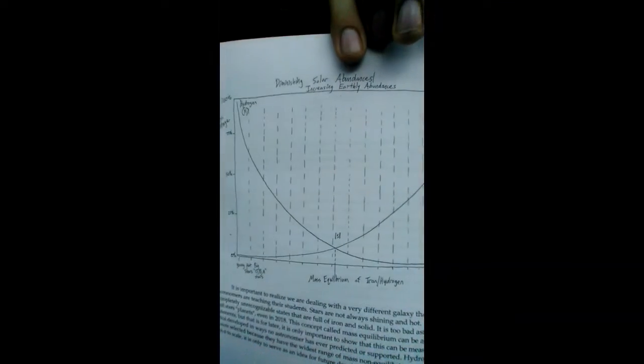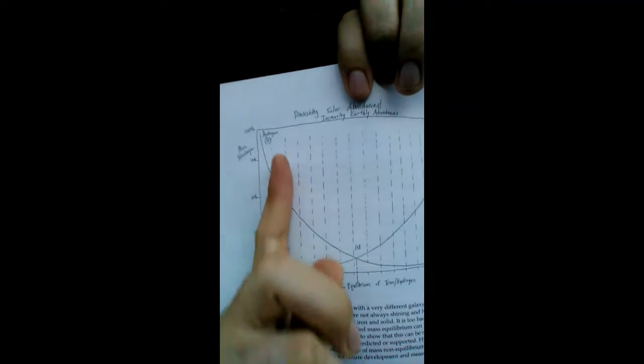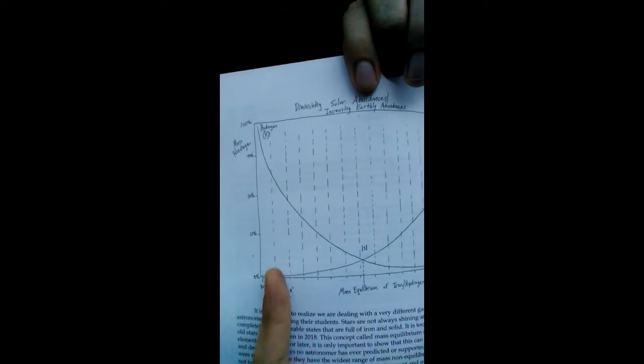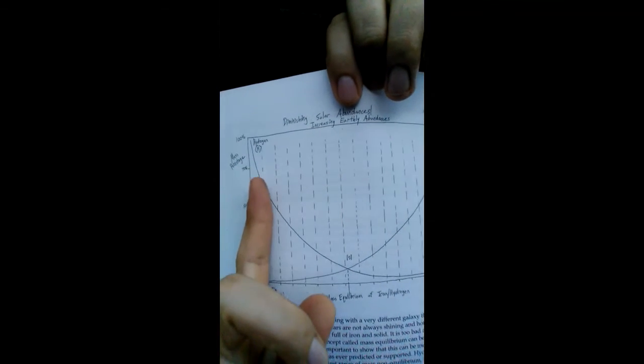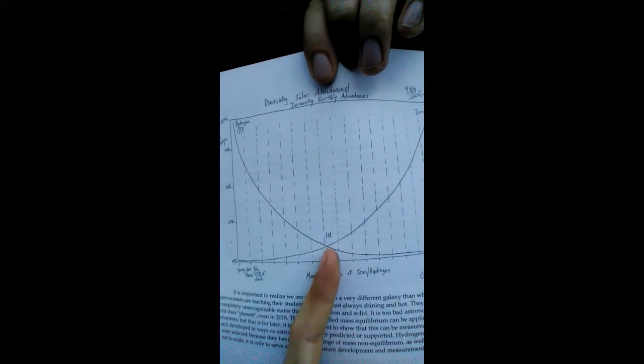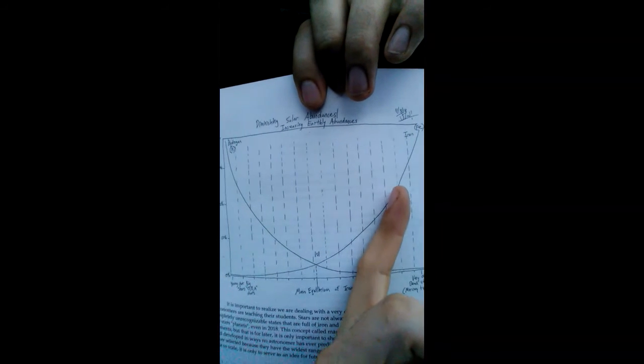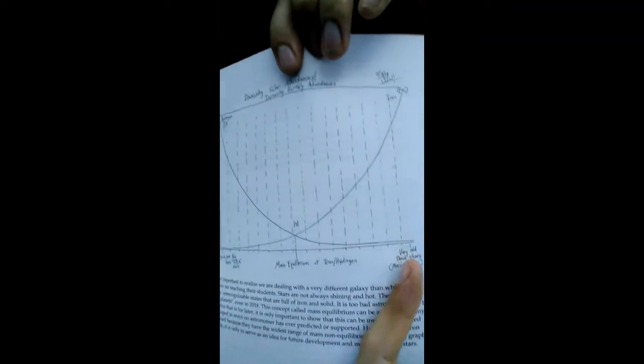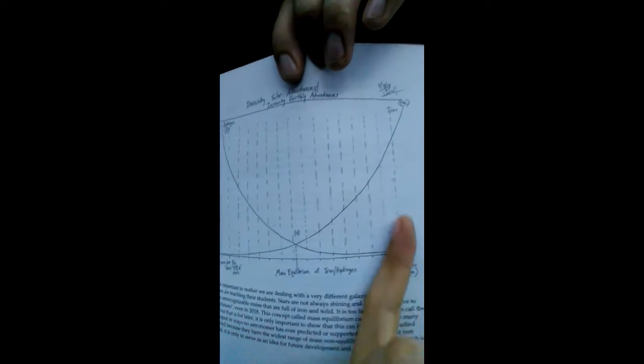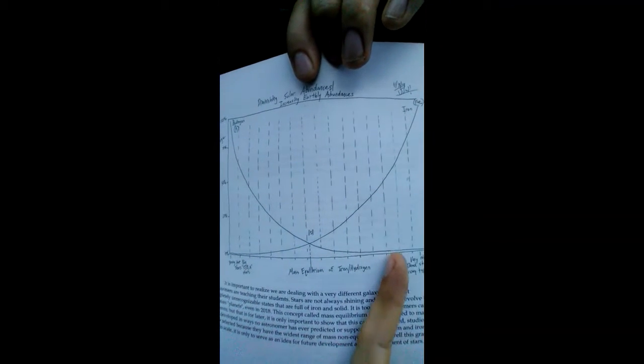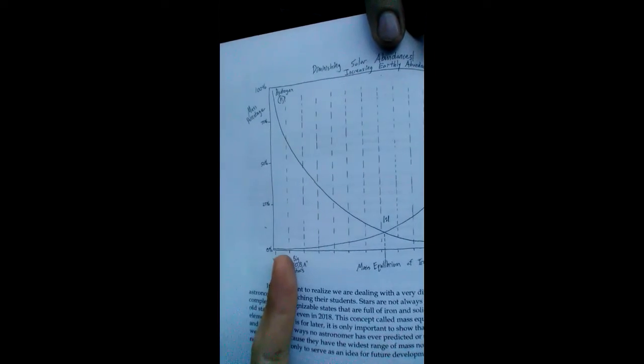And I have a graph here. So you have young stars with lots of hydrogen, mostly hydrogen. And as they lose the hydrogen, they gain iron. So old dead stars like Mercury have a lot more iron than hydrogen. And young stars similar to the Sun, or even hotter like O-type stars, have a lot of hydrogen.